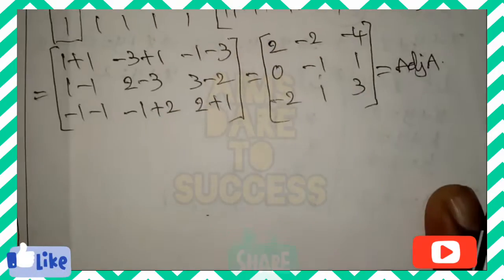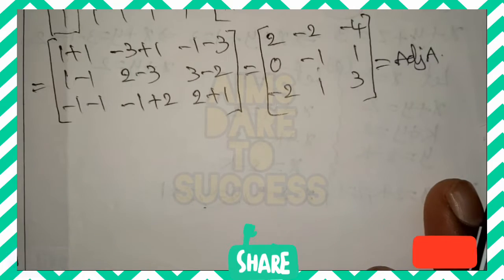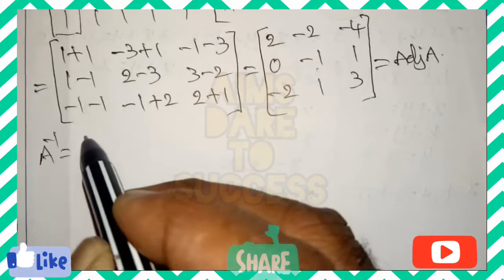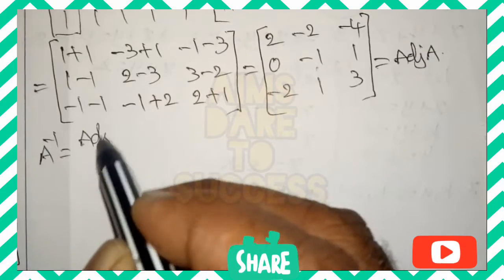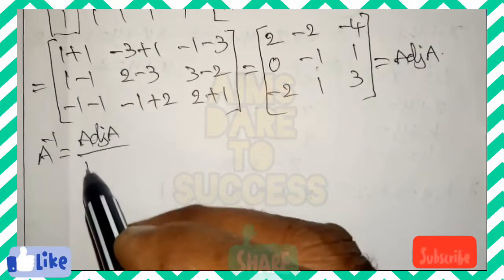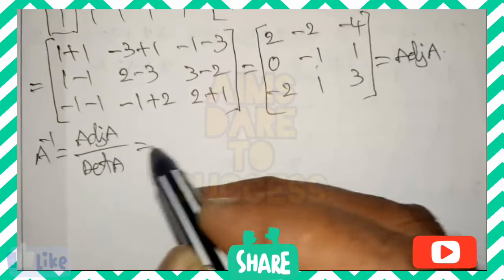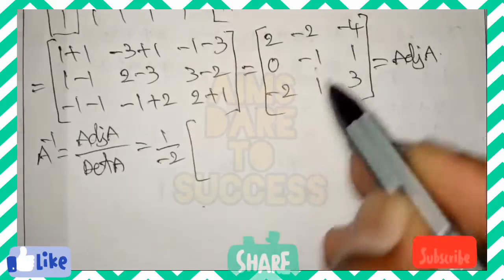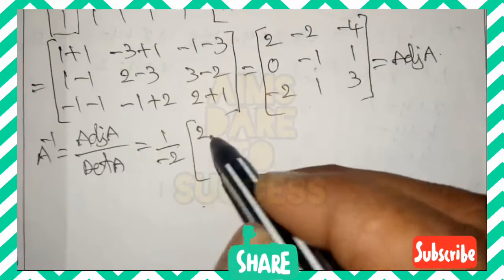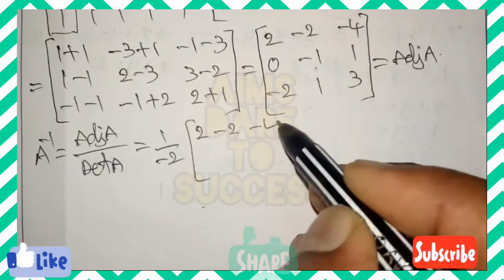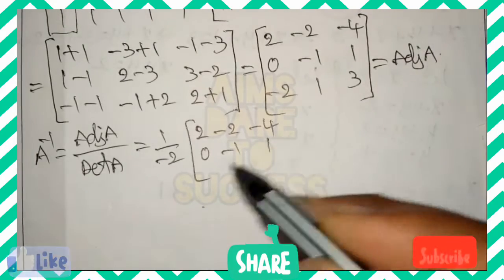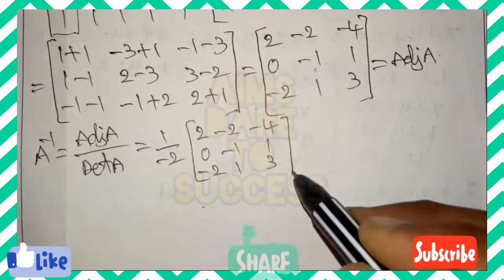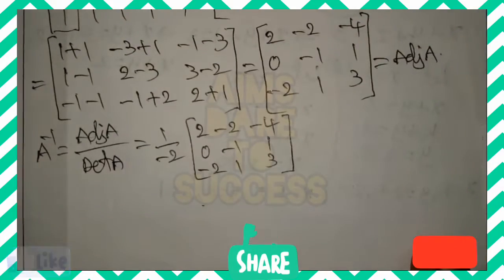This is the adjoint of the given matrix A. Next, the A inverse formula: A inverse equals adjoint of A divided by det(A). So A inverse equals (1 / det A) times adjoint A, which is (1/−2) into the matrix: [2, −2, −4 / 0, −1, 1 / −2, 1, 3].